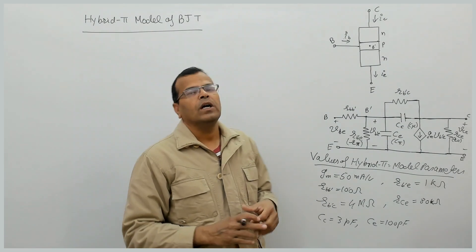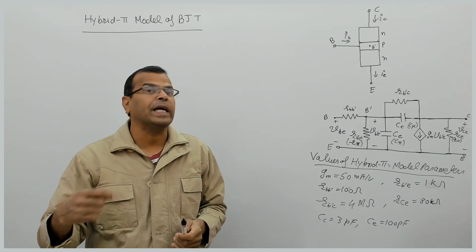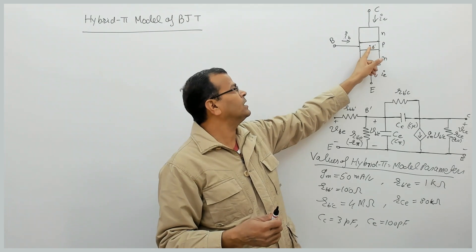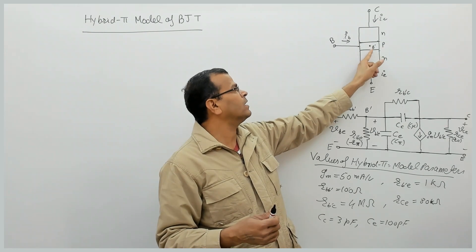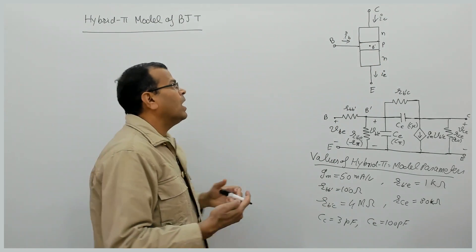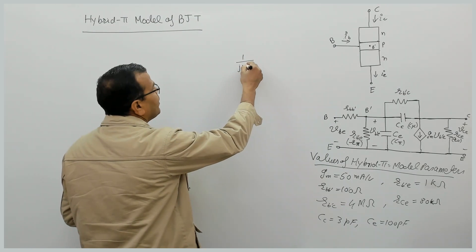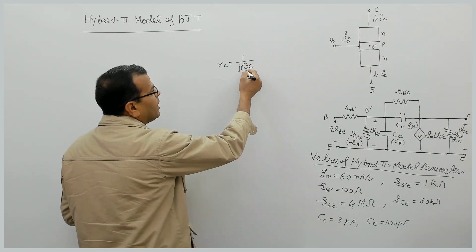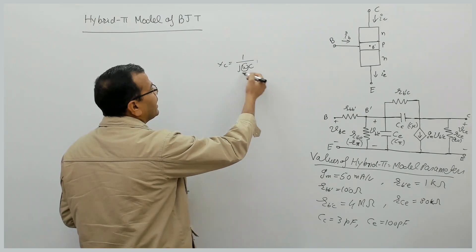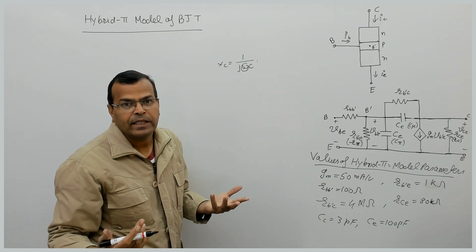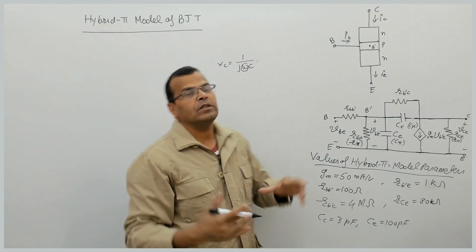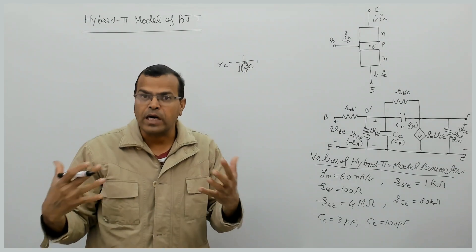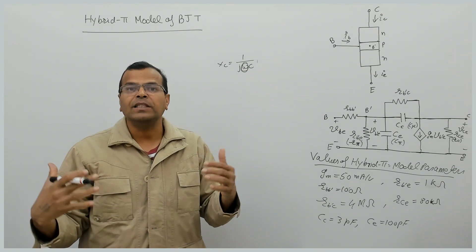At high frequencies, we cannot neglect the junction capacitances of BJT — the capacitance offered by the collector-base junction and the emitter-base junction. The reason is that at high frequency, the reactance offered by a capacitor is 1/jωC. If omega is small, the impedance is large and you can neglect it. At low frequencies, these capacitors behave like open circuits, but when frequency increases, they cannot be neglected.